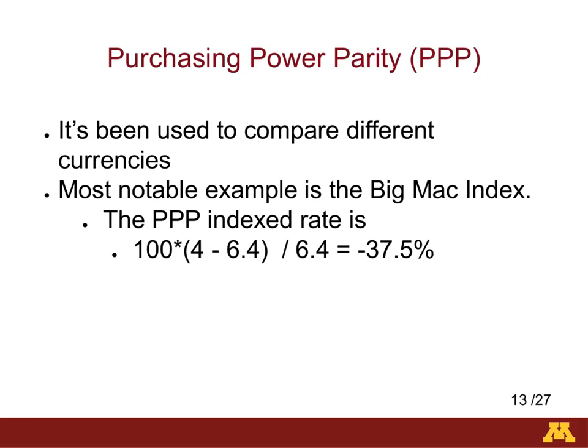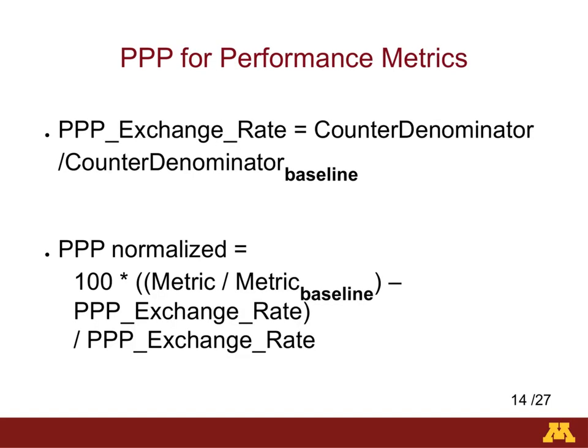This means that an undervalued currency signifies that dollar-equivalent prices are lower in China than prices in the US. The opposite occurs when the currency is overvalued — dollar-equivalent prices are higher than in the United States. So what does this have to do with computers? We adapted the purchasing power parity formula to normalize performance metrics. The PPP exchange rate is equivalent to the currency exchange rate of the Big Mac index. For our purposes, a performance metric's denominator is used to compute the PPP exchange rate.